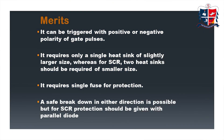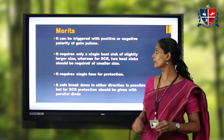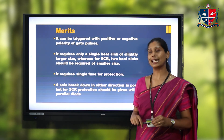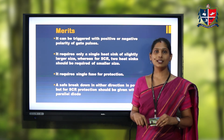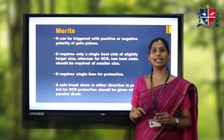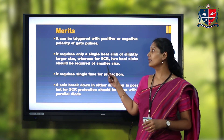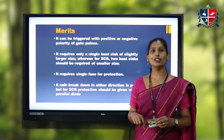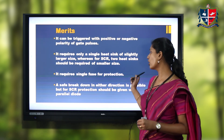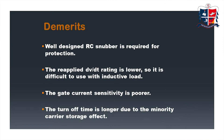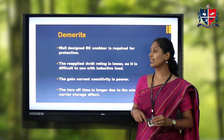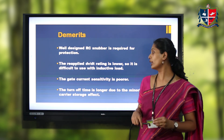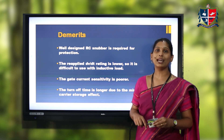Now let's discuss the merits and demerits of TRIAC. Since it is a bidirectional thyristor, it can be triggered with both positive and negative gate pulses. Another advantage is that it requires only one heatsink of larger size, unlike SCR which requires two heatsinks of smaller sizes. It also requires only a single fuse for protection and has safe breakdown in either direction. On the demerits side, gate current sensitivity is poor, it requires a well-designed RC snubber circuit for protection, and due to minority carrier storage effect, the turn-off time is much longer.